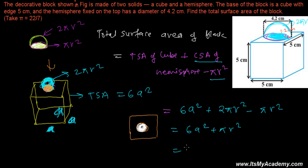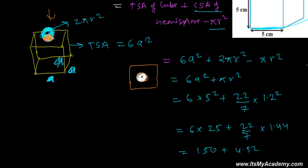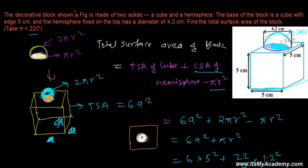Substituting the values: a = 5 cm and r = 2.1 cm, and π = 22/7. So it's 6 × 5² + (22/7) × (2.1)². That gives 6 × 25 = 150, plus (22/7) × 4.41 = 13.86 — wait, using the speaker's values: 150 + 4.52 = 154.52. The total surface area of the block is 154.52 cm².